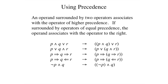In particular, we agree that an operand in such a situation always associates with the operator of higher precedence. When an operand is surrounded by operators of equal precedence, the operand associates to the right by convention.